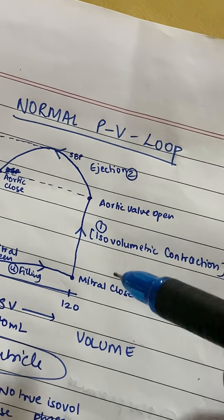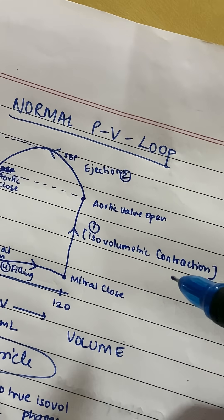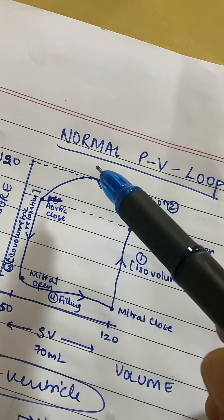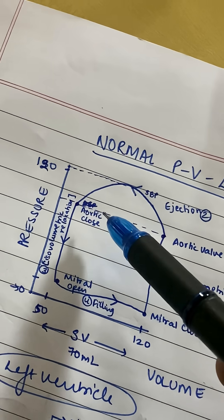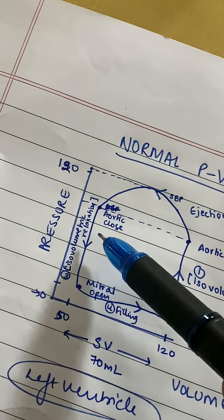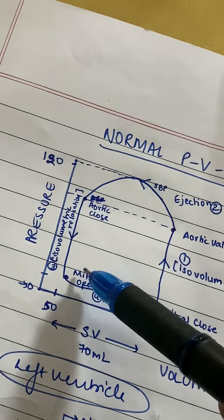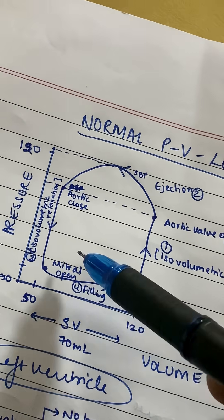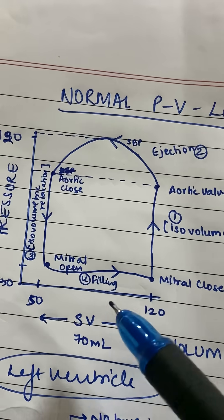Your ventricle is fully filled, it contracts against a closed aortic valve — that's isovolumetric contraction, where volume remains the same but pressure increases. Then when the aortic valve opens, there is ejection. It reaches the peak pressure, which is your systolic blood pressure. Then the aortic valve closes, the ventricle relaxes — isovolumetric relaxation — and finally the mitral valve opens, allowing the ventricle to be filled from the left atrium.